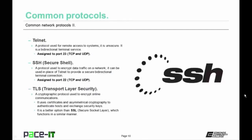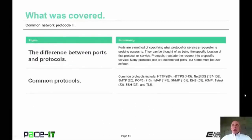Secure Shell, or SSH, is a protocol used to encrypt data traffic on networks. It can be used in place of Telnet to provide a secure bi-directional terminal connection, and it's assigned to port 22 using TCP and UDP. I mentioned TLS earlier — Transport Layer Security. It's a cryptographic protocol used to encrypt online communications. It uses certificates and asymmetrical cryptography to authenticate hosts and exchange security keys. TLS is a better option than Secure Socket Layer, which functions in a similar manner.